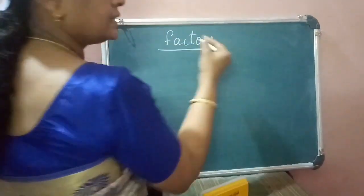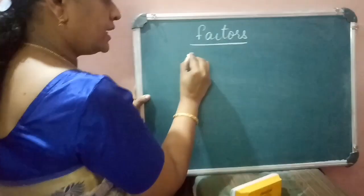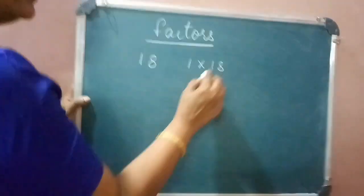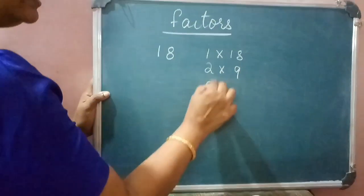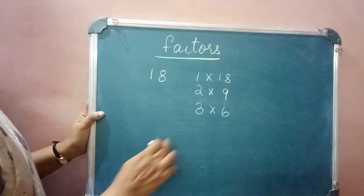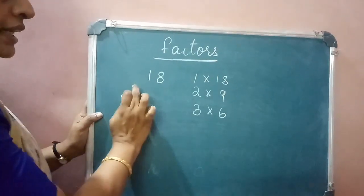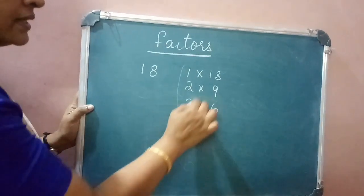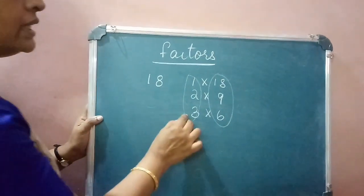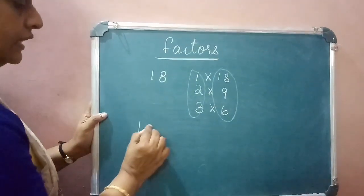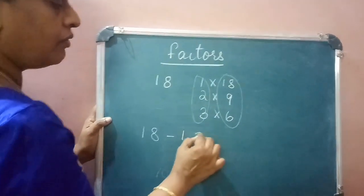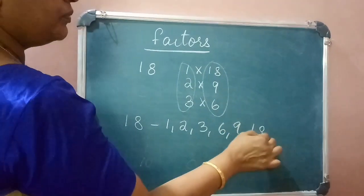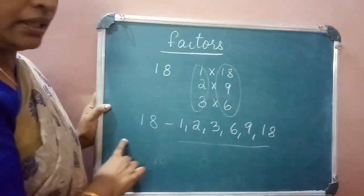Let me explain this through examples. Take the number 18. 18 can be written as 1 × 18, 2 × 9, and 3 × 6. So 18 can be expressed as these products, and all these numbers — 1, 2, 3, 6, 9, 18 — are called factors of 18.